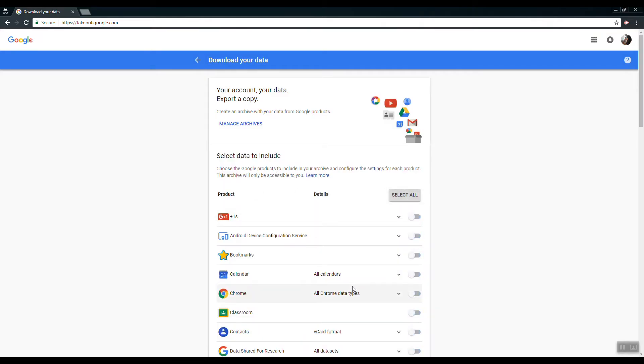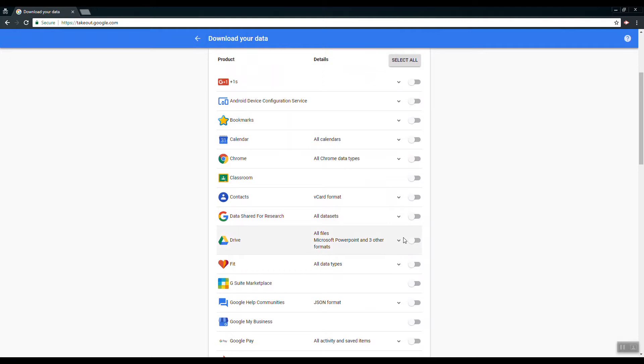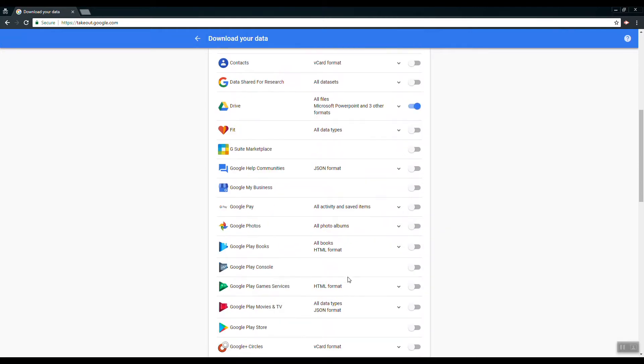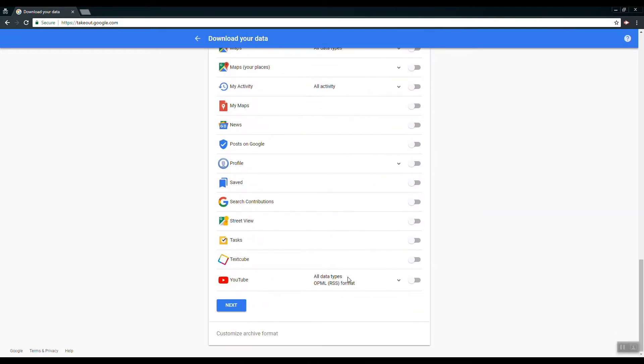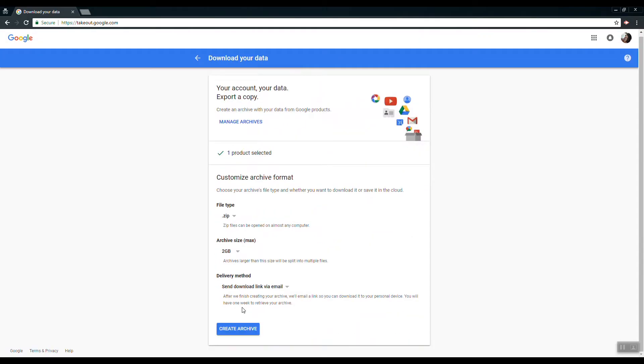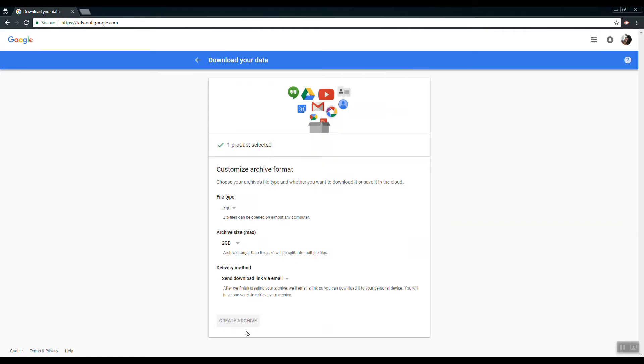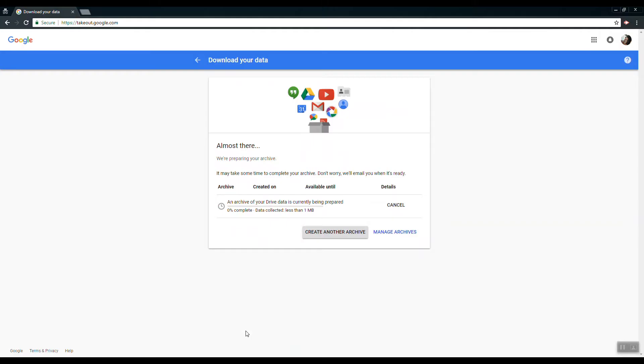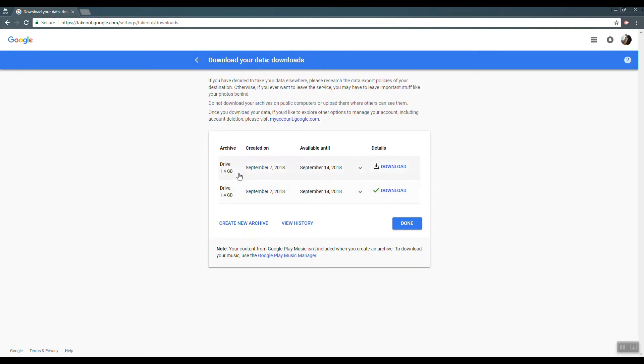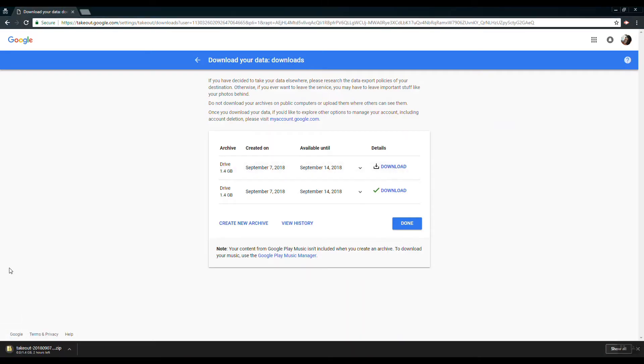Choose Drive from the list of products. Click on Next and then click on Create Archive. Time taken to create the archive will depend on the amount of data stored in your Drive. Once it's completed, click on the download option to download your data as a zip file.